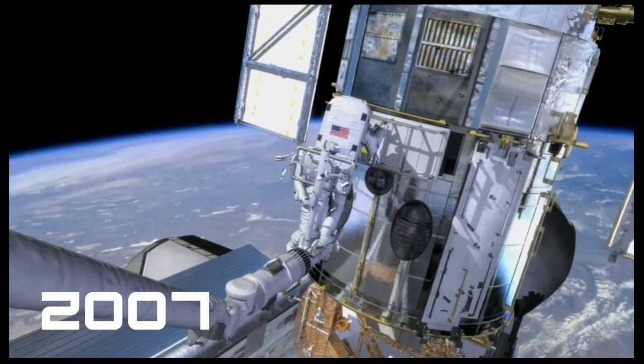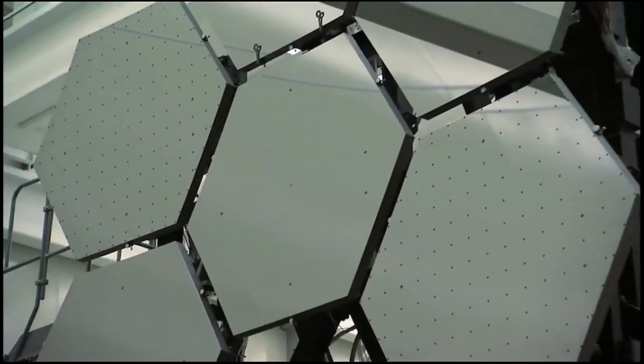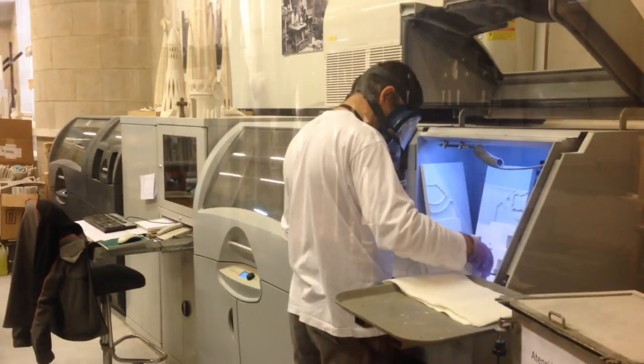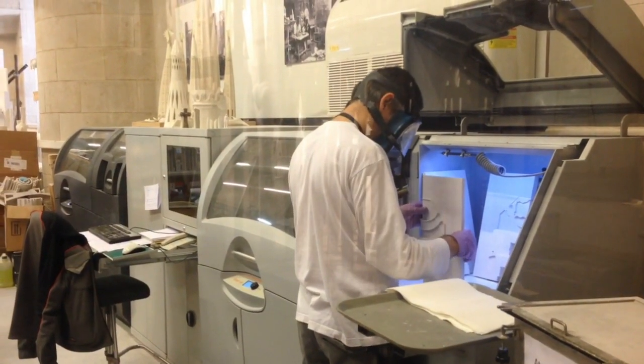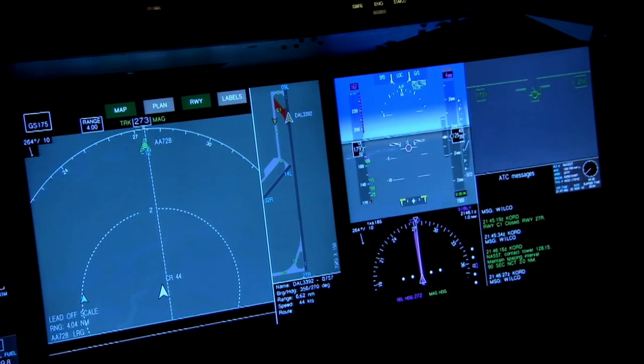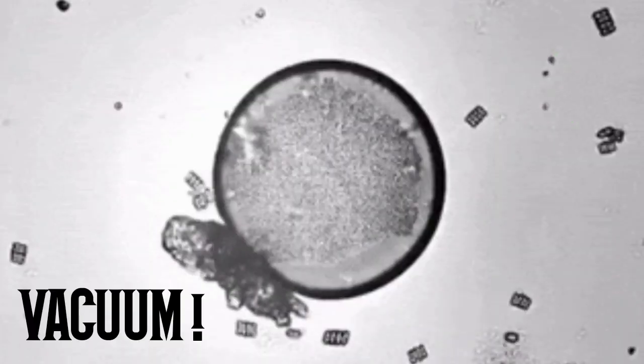In 2007, European Space Agency conducted a research in which tardigrades were taken to space to study their survival, adaptations, and behavioral changes in space. The results of the study were quite promising, that tardigrades survived in space for 10 days without any life support system.